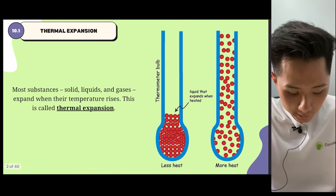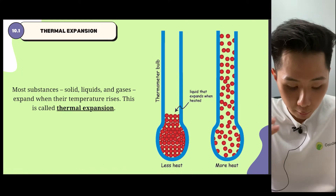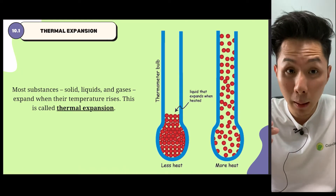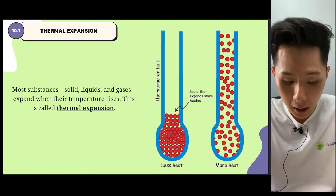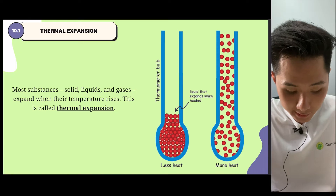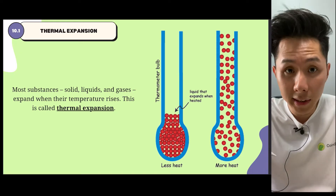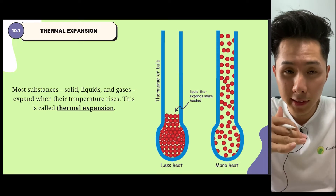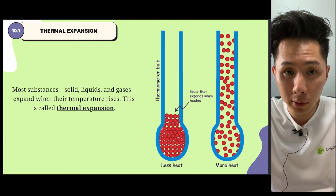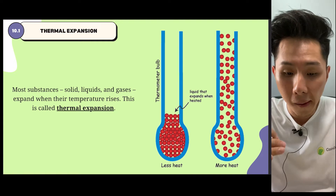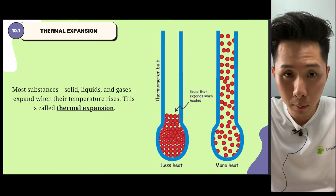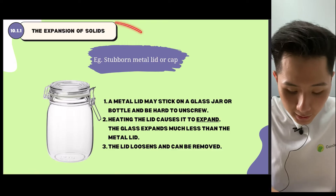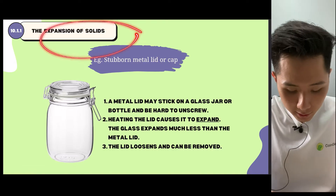All substances — solid, liquid, and gases — they expand when temperature rises. And this is called thermal expansion. We're going to look into several examples of thermal expansion in solid, liquid, and gas. And let's start off with solid.